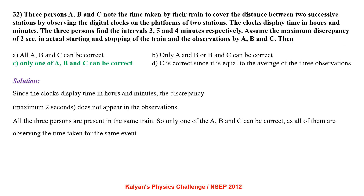Three persons A, B and C note the time taken by their train to cover the distance between two successive stations by observing digital clocks displaying time in hours and minutes. They find intervals 3, 5 and 4 minutes respectively, with a maximum discrepancy of 2 seconds. Since clocks display only hours and minutes, the 2-second discrepancy does not appear. All three are on the same train observing the same event, so only one of A, B and C can be correct.